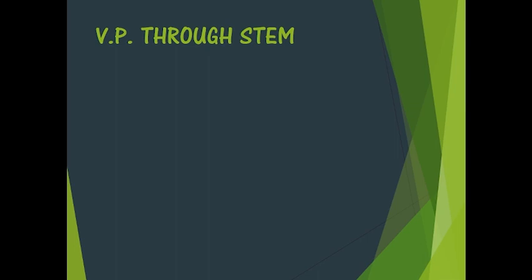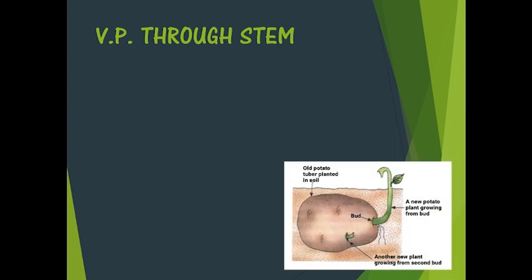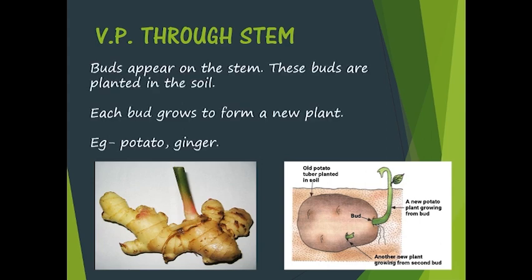Next is vegetative propagation through stem. The most common modified stem we use — and eat — is the potato. Potatoes have tiny small buds we call eyes, which have the capability to regenerate and form buds. If planted, these buds can form the entire plant. If you leave a potato in the open for about 15-20 days or sprinkle some water on it, after a few days you will observe green buds coming out — you can try this at home. Another modified stem is ginger, where buds appear on the stem and when planted in soil, a new plant can be grown.